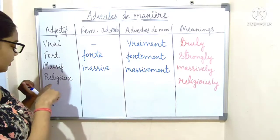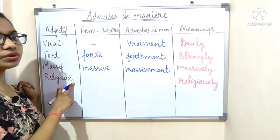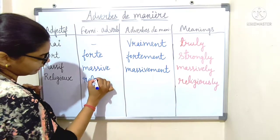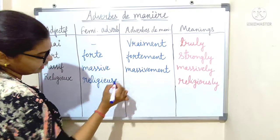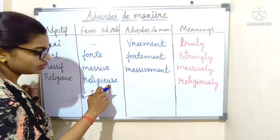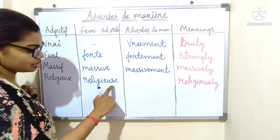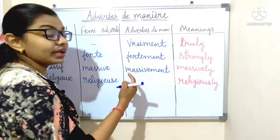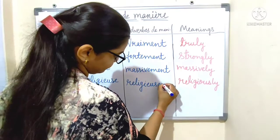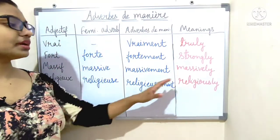Last: 'religieux', which means 'religiously'. It ends with the consonant X, so we make it feminine: R-E-L-I-G-I-E-U-S-E. When the adjective ends in E-U-X, we make it feminine by using E-U-S-E. Then add '-ment': 'religieusement', which means 'religiously'.